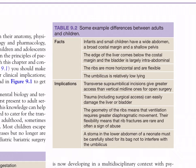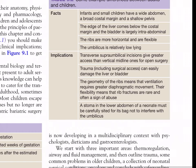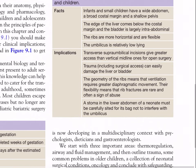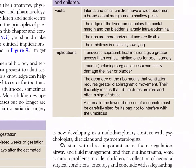Implications: transverse supra-umbilical incisions give greater access than vertical midline ones for open surgery. Trauma, including surgical access, can easily damage the liver or bladder. The geometry of the ribs means that ventilation requires greater diaphragmatic movement. Flexibility means that rib fractures are rare and often a sign of abuse. A stoma in the lower abdomen of a neonate must be carefully sited so as not to interfere with the umbilicus.